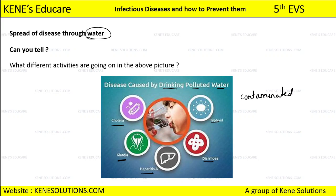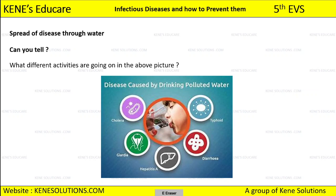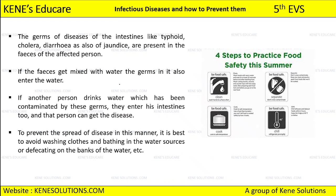The most common disease caused by contaminated food and water is typhoid. You should always boil your water before drinking it to stay safe from polluted water. The germs of intestinal diseases like typhoid are caused when germs enter the intestine.